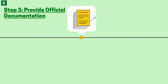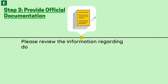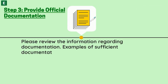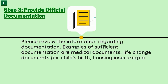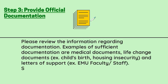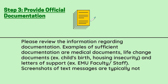Step 3: Providing official documentation. Please review the information regarding documentation. Examples of sufficient documentation are medical documents, life change documents — for example, evidence of a child's birth or housing insecurity — and letters of support from EMU faculty, staff, and or anyone else. Screenshots of text messages are typically not sufficient forms of documentation.